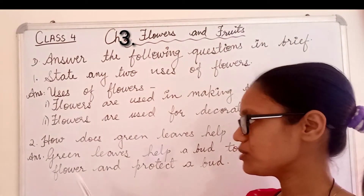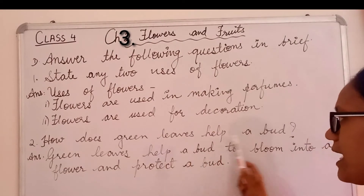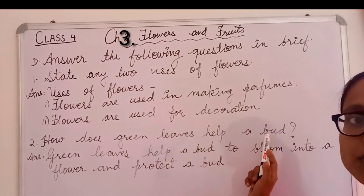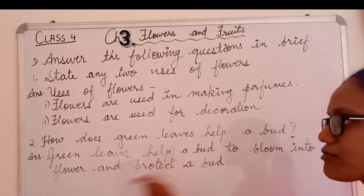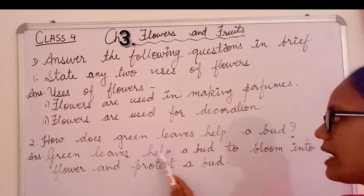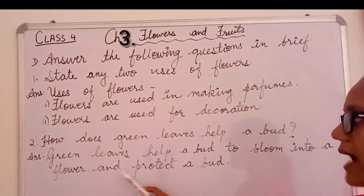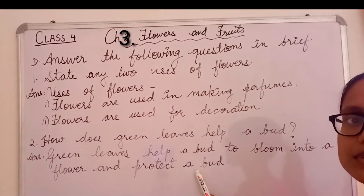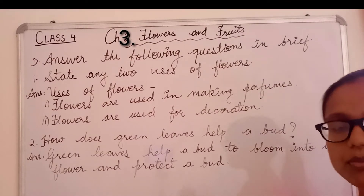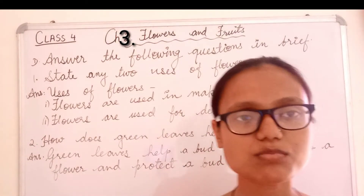Question number two: how do green leaves help a bird? Green leaves protect the bird and also help the bird to bloom into a flower.